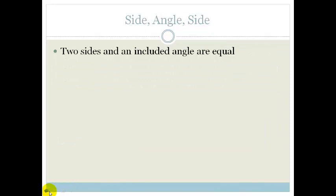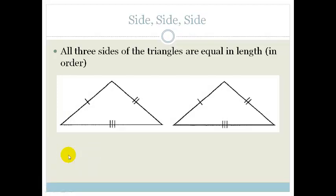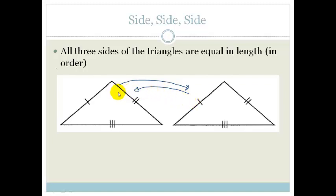We're going to be looking at the different properties that give you congruent triangles. What congruency means is that if I took this triangle and shifted it over and put it on top of that triangle, it would cover that triangle totally, completely. We don't mean flip it over — we're taking this and sliding it across. Then we say those two triangles are congruent. The first condition for congruency is side, side, side — SSS — where all three sides of the triangle are equal in length.